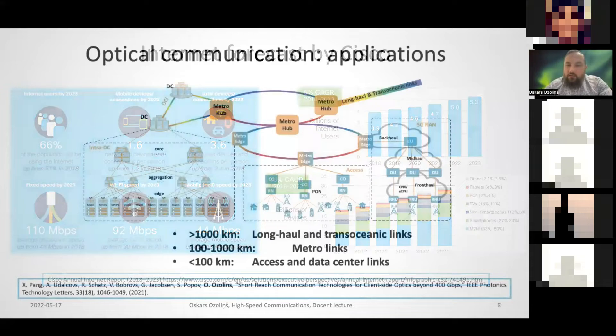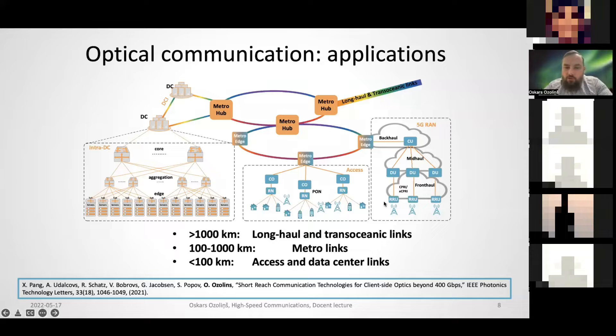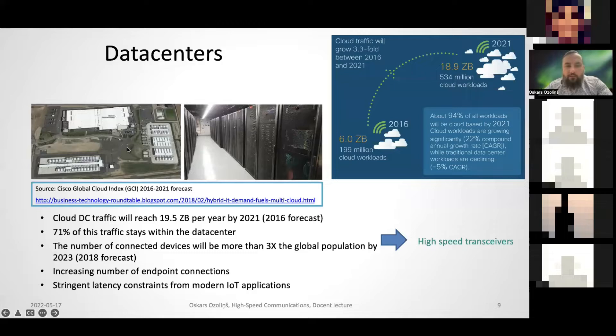Today I won't focus on all the network parts that exist, but will specifically look at data centers — links inside data centers and between data centers as well. There are different technologies available for trans-oceanic links, metro links, 5G front-haul and access networks, but the main focus will be on data center interconnects.